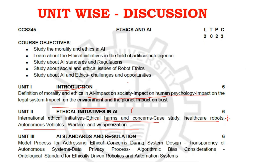Unit 3 covers standards for ethically driven robots and autonomous systems. You also need to look at algorithm bias considerations and the model process for addressing ethical concerns. These are the most important key areas.